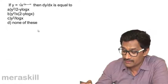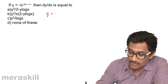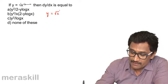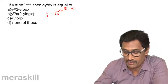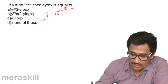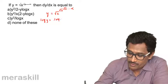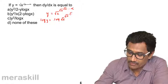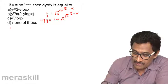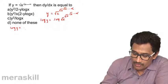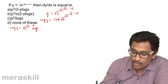Now we have something interesting: y equals √x raised to √x raised to √x, and so on to infinity — an infinite tower. Similar to what we did for y = x^(x^x...). We take log y = log of (√x)^(√x^√x...) to infinity, so the exponent part comes down: log y = (√x)^(√x...) · log(√x).